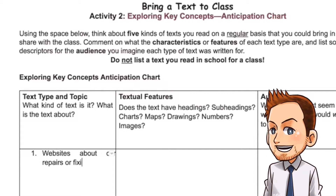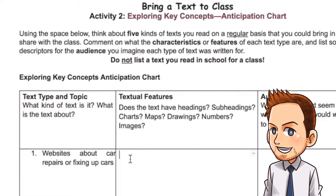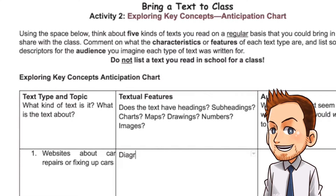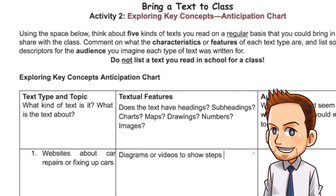In the second column, textual features, it asks what features does the text have. I might say there's diagrams or videos to show steps of repairs.